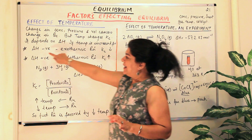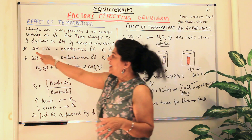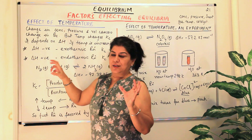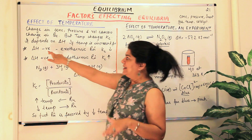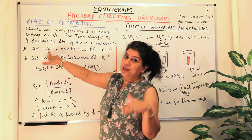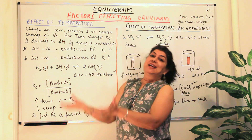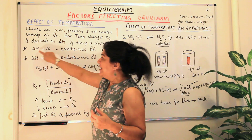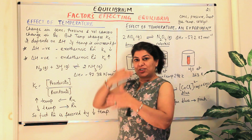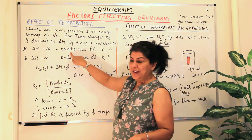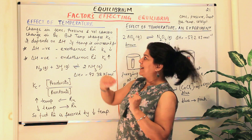Delta H gives you an idea of whether the reaction is exothermic or endothermic. Delta H is the amount of heat change that occurred. If it is negative, that much heat was lost — the final heat is less than the initial heat — so delta H negative means it is an exothermic reaction. Delta H positive means that energy has been gained, so delta H positive indicates an endothermic reaction.